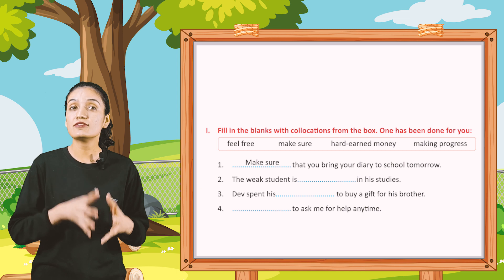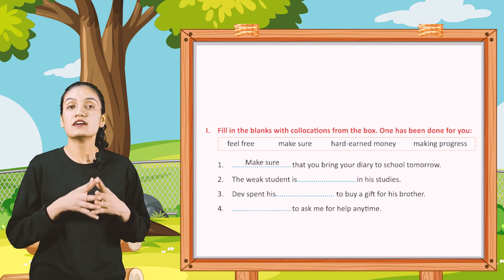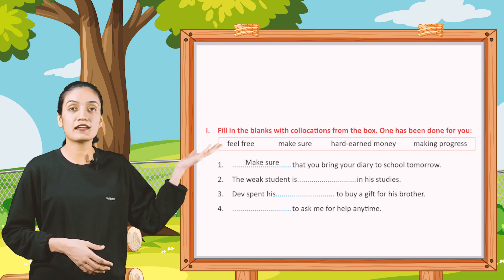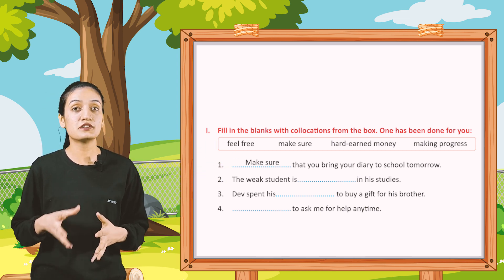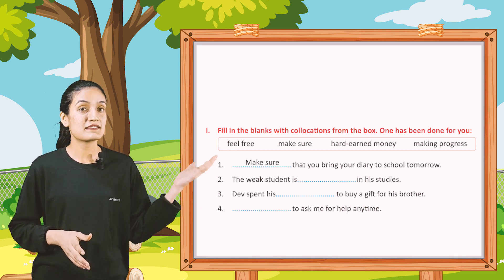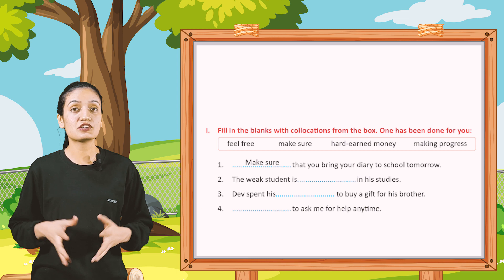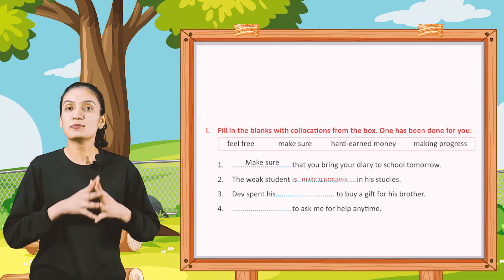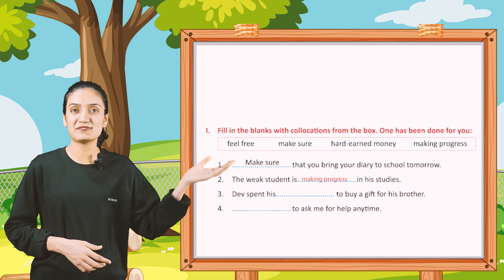Now part I. Fill in the blanks with the collocation from the box. One has been done for you. Number one: Make sure that you bring your diary to school tomorrow. Second: The weak student is dash in his study — its answer will be 'making progress'. So in this way, fill in the blanks by yourself.